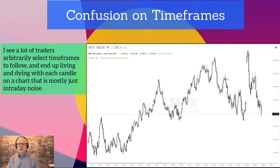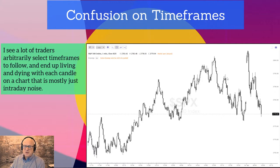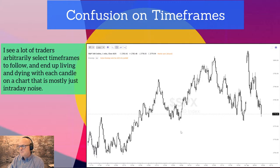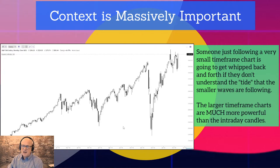I see a lot of traders arbitrarily selecting timeframes — 'you have to follow the 30-minute chart' with no rhyme or reason behind the selection. They're living and dying with each candle on a chart that's mostly intraday noise. Some follow the one-minute chart, where you see a lot of noise. People can't tell the difference between charts, especially if they disagree. It's important to have context — context is massively important.